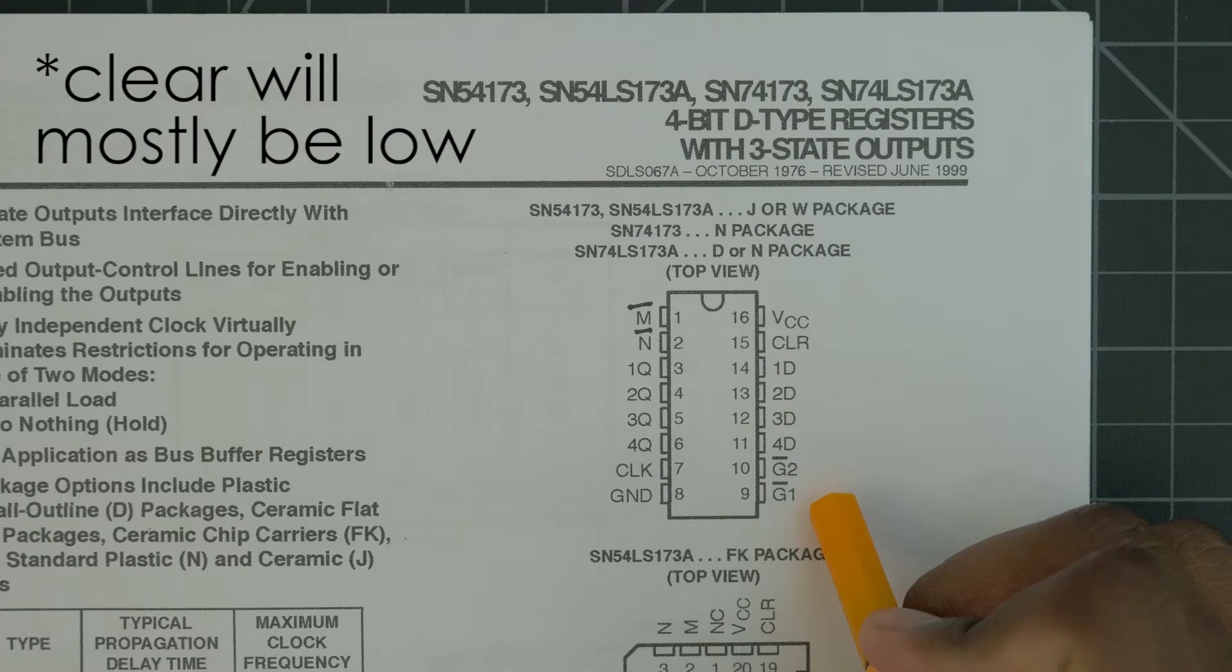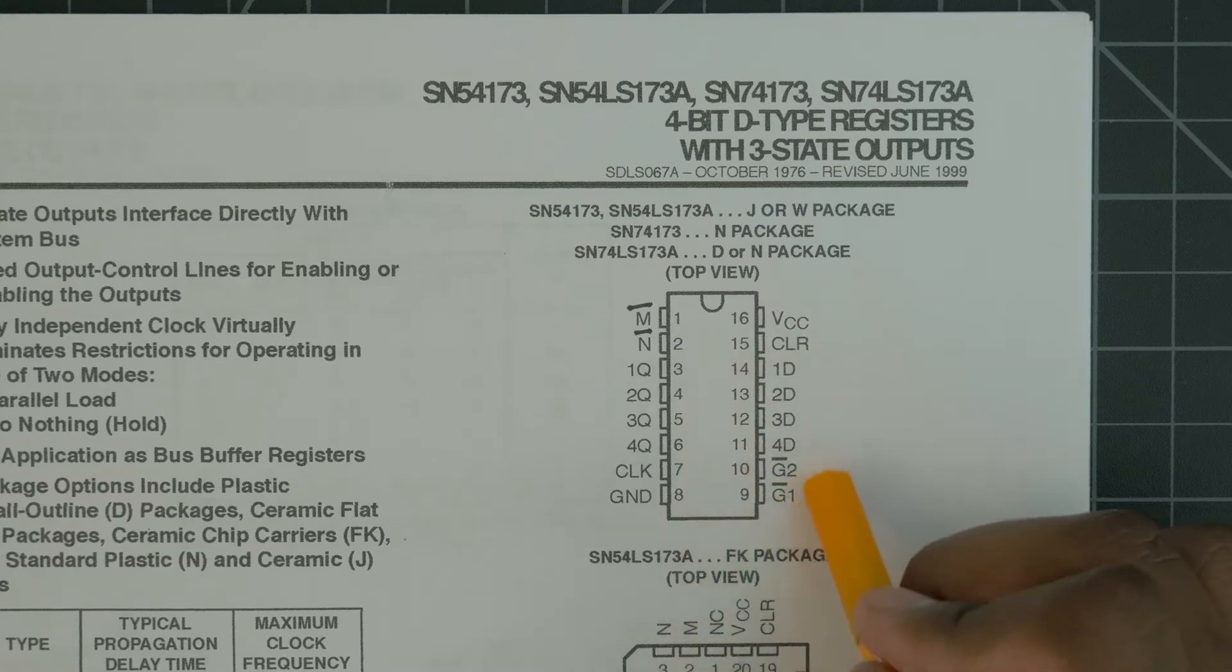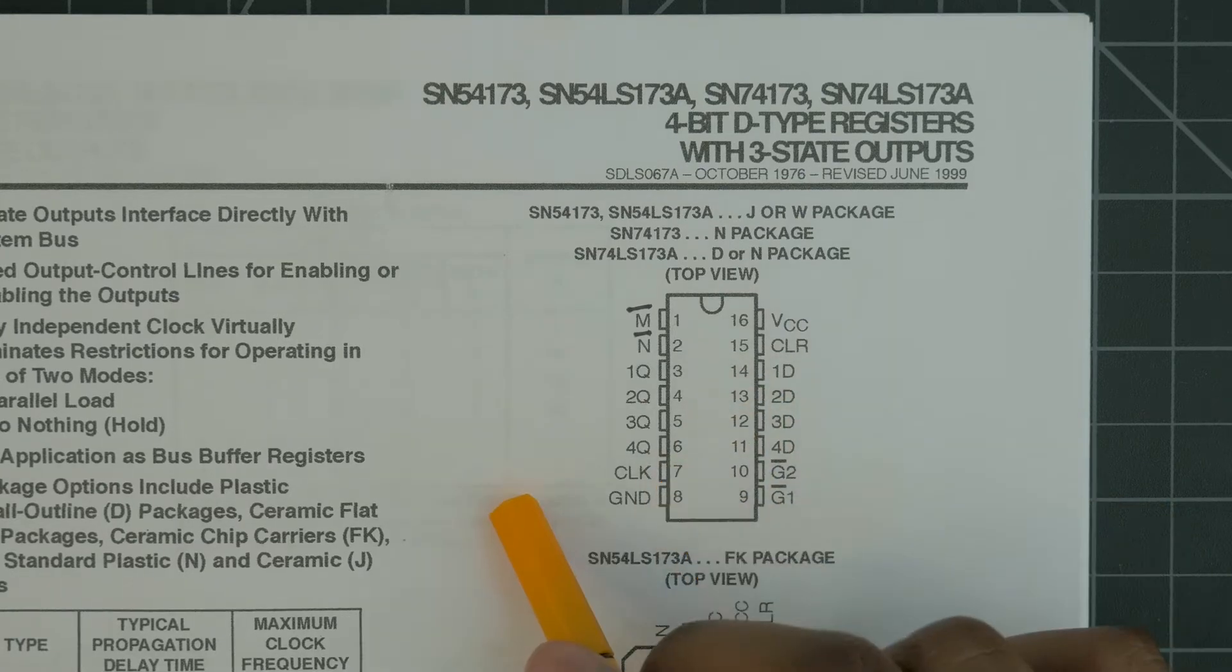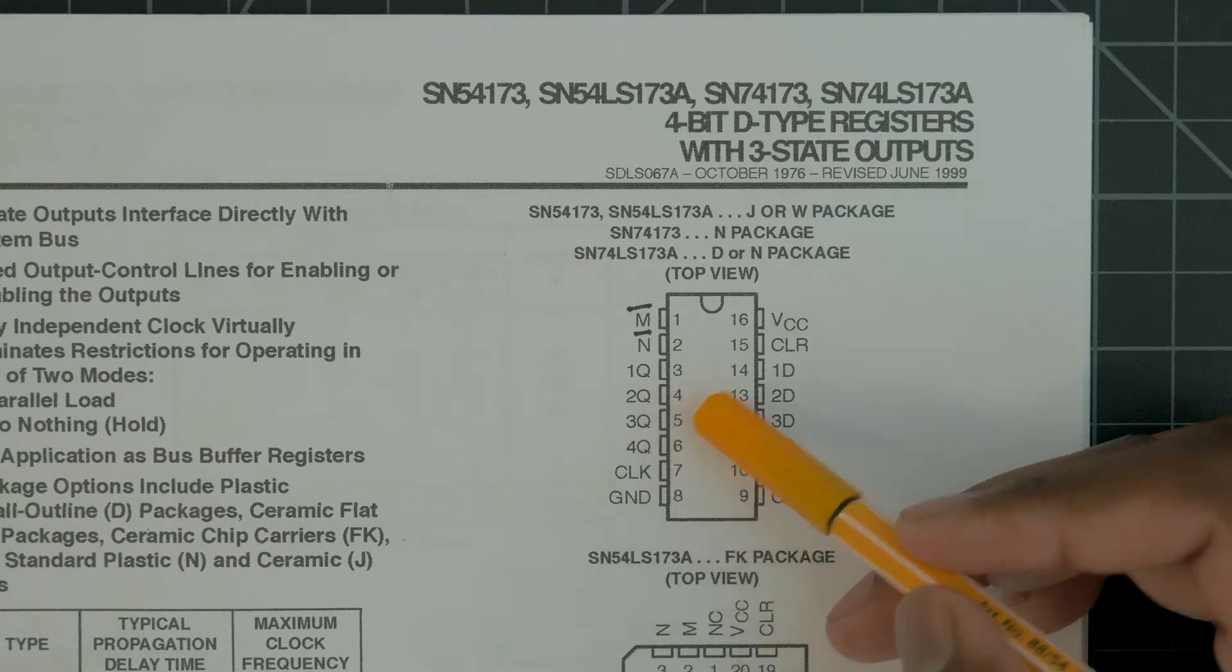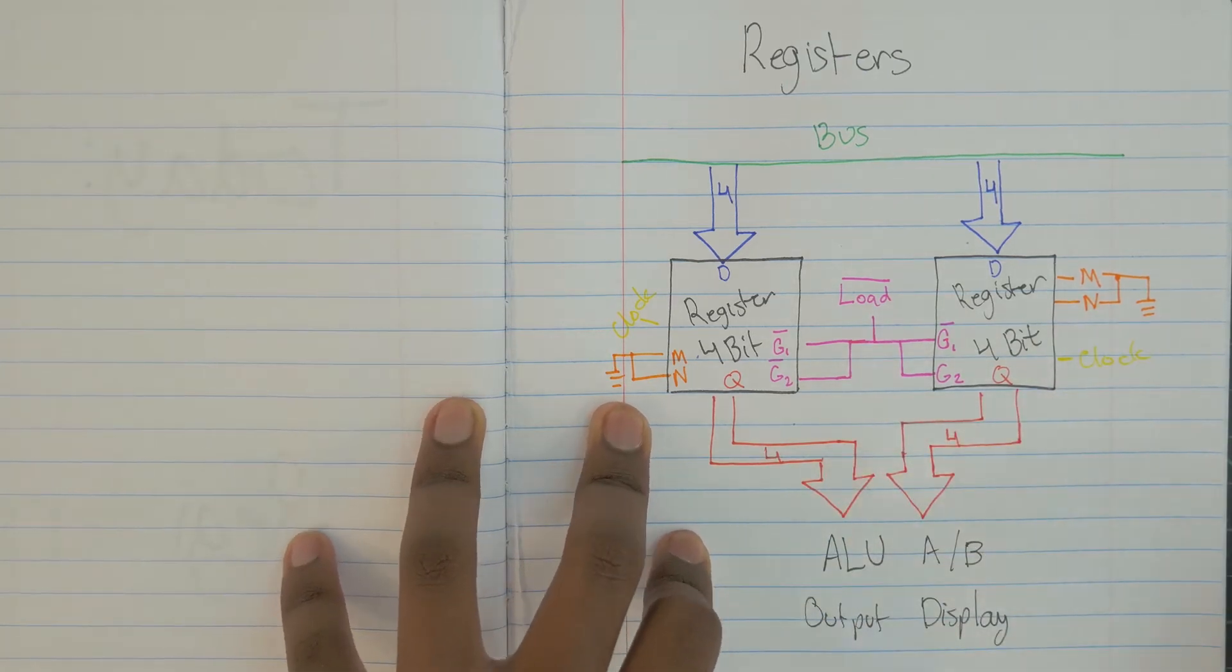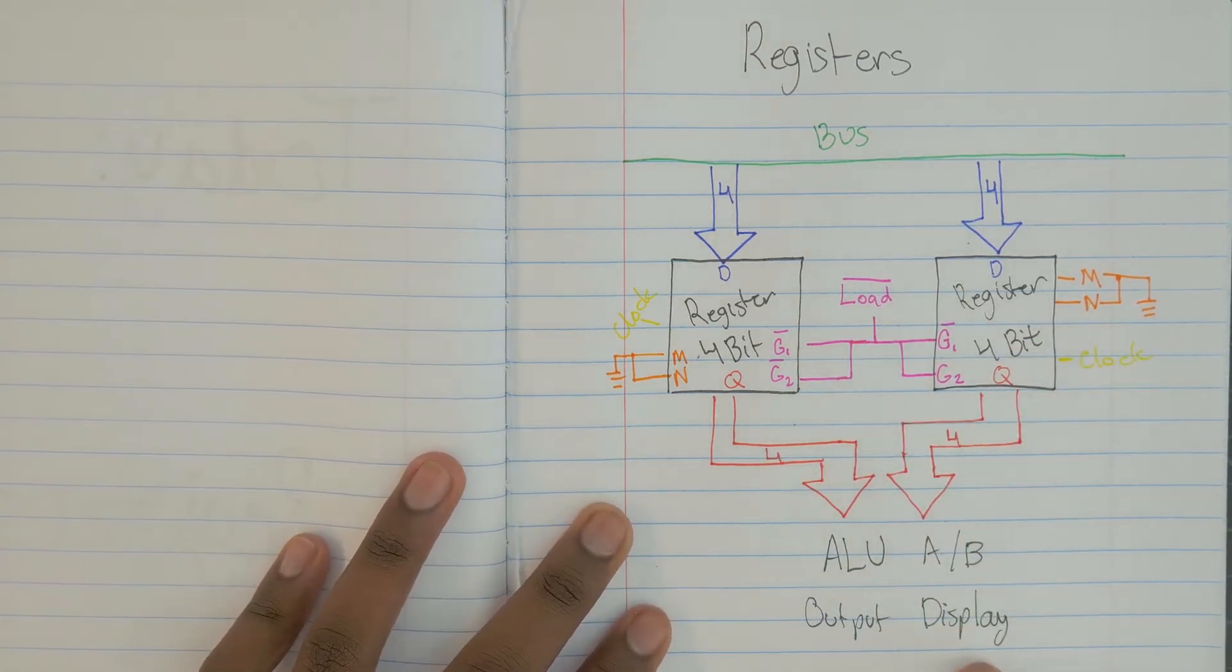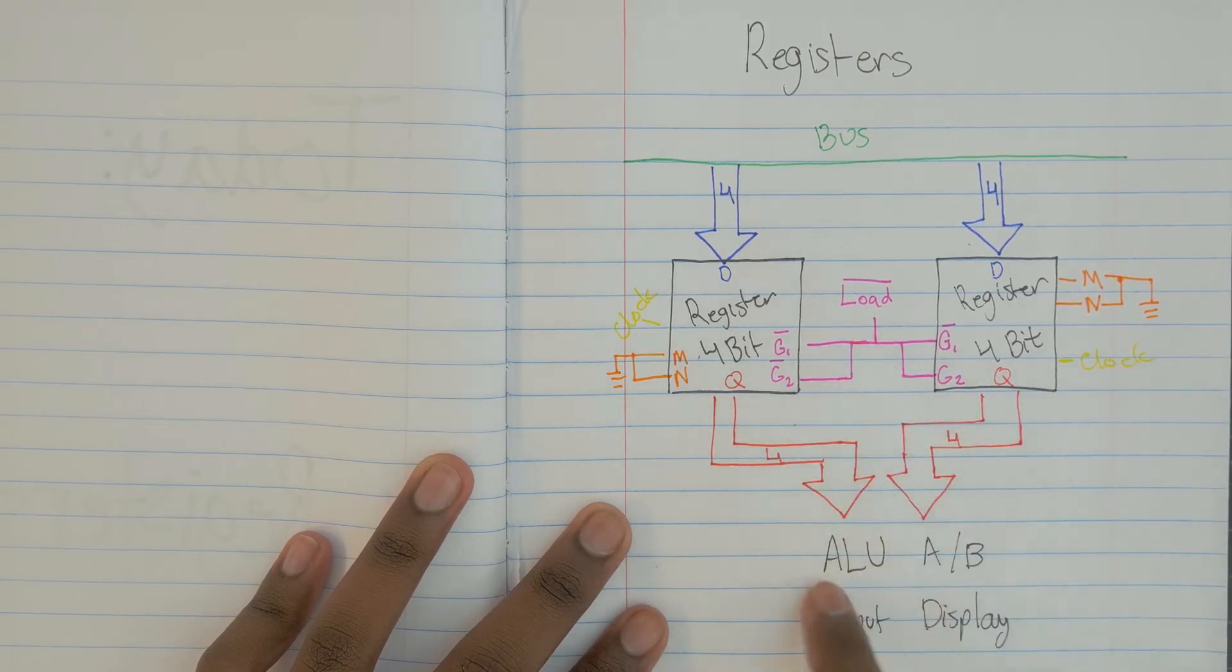So everything here is pretty standard. M and N are going to be tied low. The clear line is going to be a wire that we're just going to probably have on high most of the time. Then G2 and G1 are our enable lines. So G2 and G1 are going to be tied together to a single line that will either be high or low to determine whether this chip will be enabled or not, where it's an active low signal. Then this clock is going to go to our clock. Now for the Q signals, we'll go over how we wire that up right now. Now the M and N lines on both of these are going to be tied to ground so that we constantly trigger the three-state buffer.